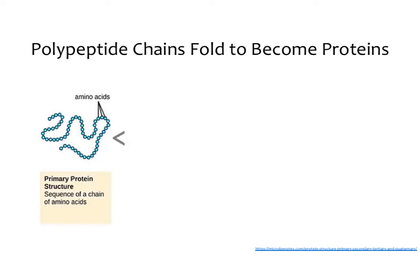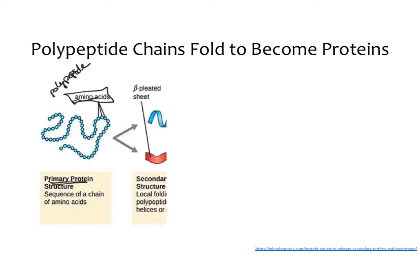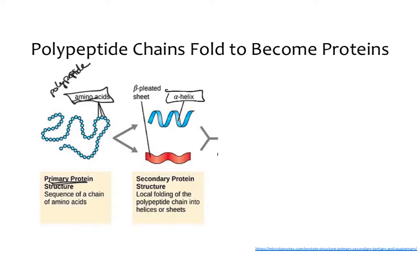Now that we have this chain of polypeptides, this is called primary protein structure — just a long chain of amino acids in its denatured or unfolded state. We then get a secondary structure, where the protein forms either alpha helices or beta pleated sheets. An alpha helix is a helical, almost DNA-like structure, while a beta pleated sheet is a zigzag-like sheet. Those are the two main secondary structures that amino acids will form into.